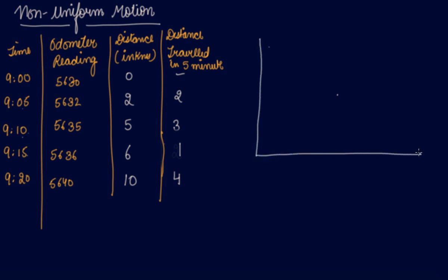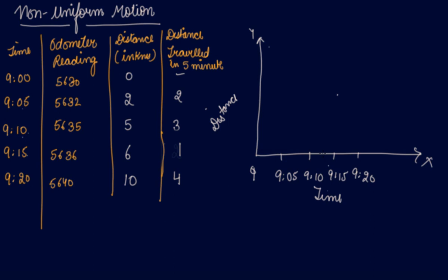Now let's plot this on the graph. On the x-axis we take time and on the y-axis we take distance. We mark times starting from 9:05am, then 9:10am, 9:15am, and 9:20am. On the y-axis we mark 2, 4, 6, 8, and 10 kilometers. At 9:05am, 0 kilometers covered. At 9:05am the car moved 2 kilometers. At 9:10am the car moved to 5 kilometers — somewhere between 4 and 5. At 9:15am the car moved to 6 kilometers. At 9:20am the car moved to 10 kilometers.